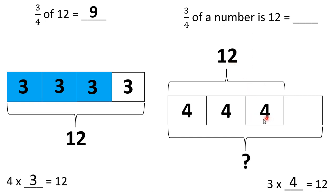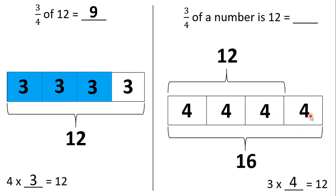So if each of these parts is worth 4, we know this remaining last piece is also going to be worth 4. Now that the entire tape diagram has all of its parts filled out, we can figure out the whole number. We have 4, 8, 12, 16. So the entire tape diagram is worth 16.